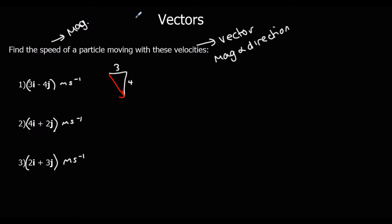How do we do that? How do we find the length of the red line? Well, it's the hypotenuse of a right angled triangle. So we can use Pythagoras, and we can say that 3 squared plus 4 squared equals the speed squared. So 9 plus 16 equals speed squared. 25 equals speed squared. The square root of 25 is 5. So the speed is 5 meters per second.